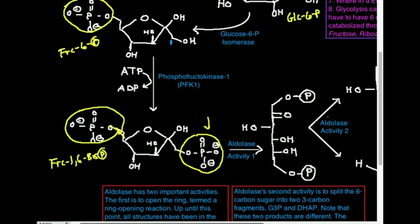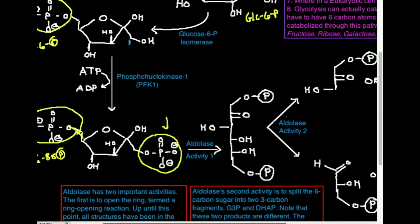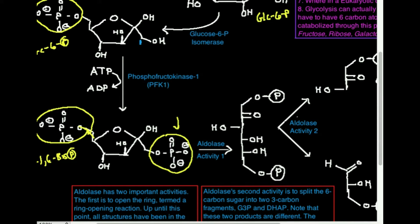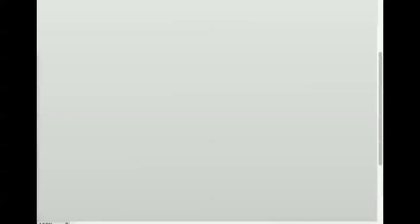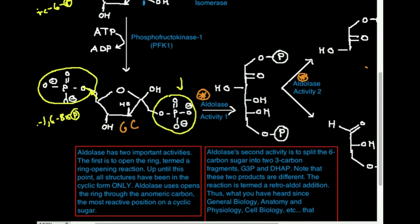Now I want to talk about the next enzyme, which is termed aldolase. You've probably heard since general biology — maybe anatomy and physiology, depending on the curriculum — that glycolysis takes one six-carbon sugar and breaks it into two three-carbon sugars. Aldolase is the enzyme that does this. This is the enzyme that breaks the six-carbon sugar into two three-carbon fragments. Fructose-1,6-bisphosphate is six carbons, so we're going to do a little bit of detail on aldolase because it's actually an important enzyme here.